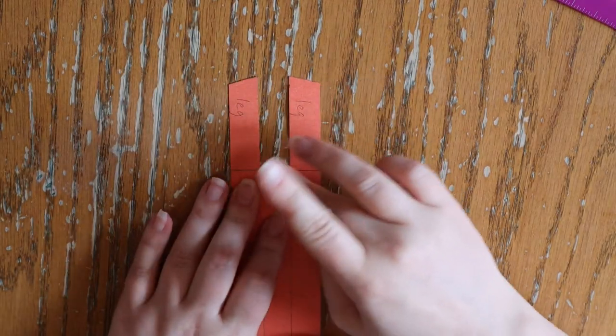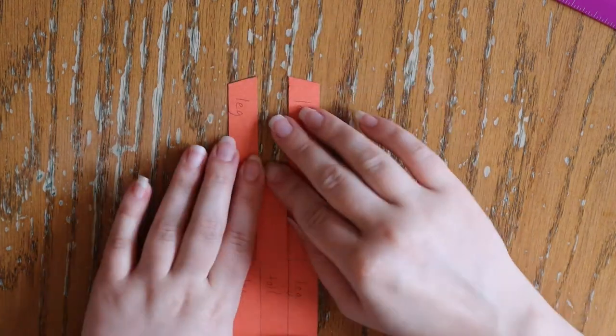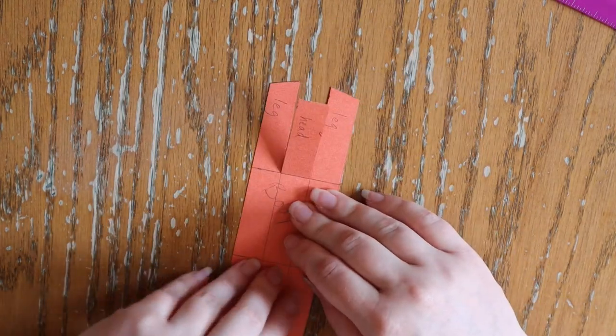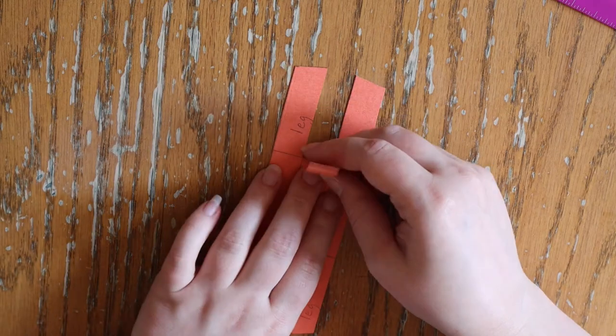The head and tail can be bent up toward the body, while the legs go in the opposite direction by being folded downward so that the paper can stand.